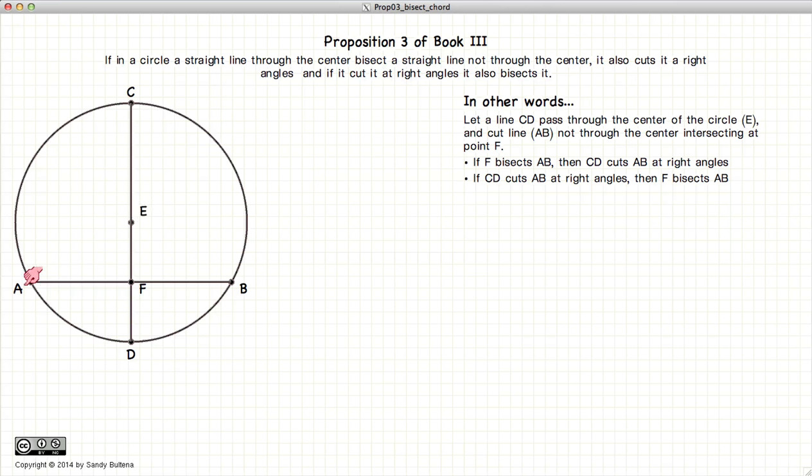the center of the circle E, which cuts another line AB that is not through the center, then if the angle AFE is a right angle, then AF will be equal to FB.